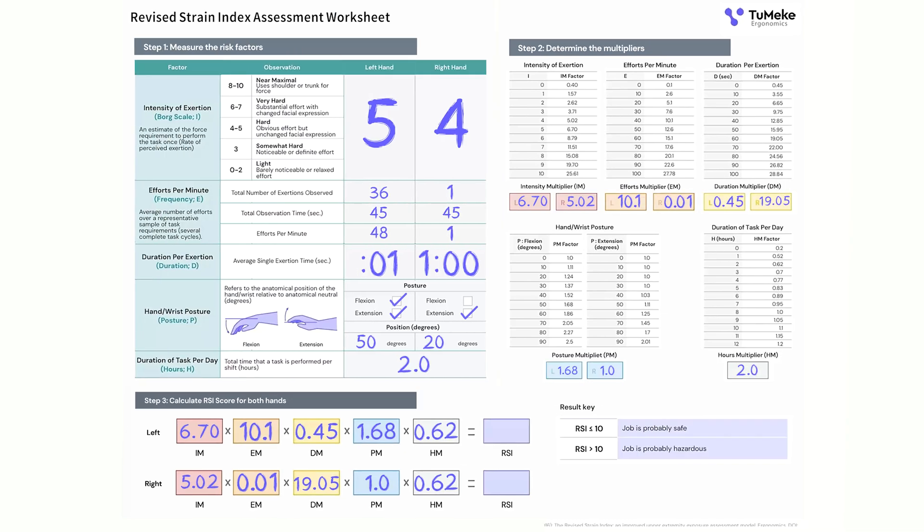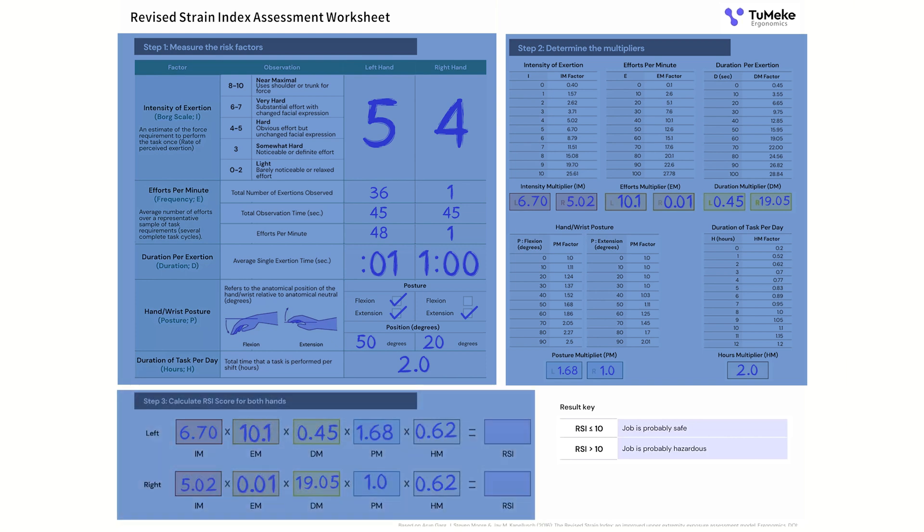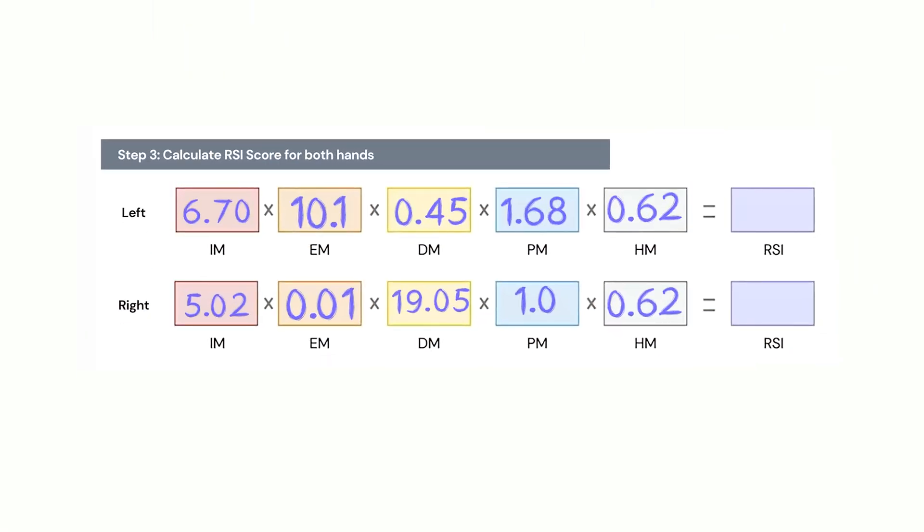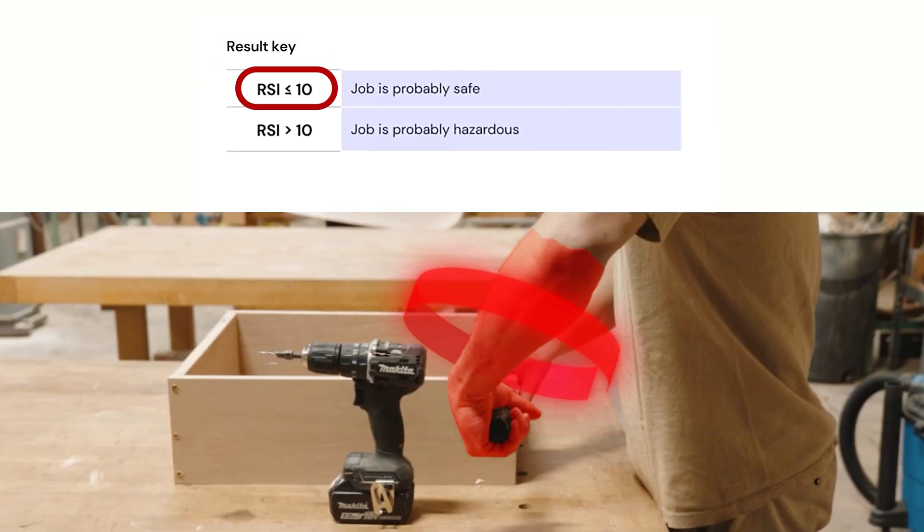All we've got to do now is calculate the RSI score for both hands. We did everything right. We've got all of our inputs in step one. We went through our conversion factors in step two. We plug those conversion factors into step three. We run the numbers and we find out that the left hand has a number over 30, while the right hand has a number under one. What does that all mean? That's where we go to the results key in the lower right hand corner. And you'll see that anything over 10 is a hazard. Anything under 10 is not, which basically means the left hand does a hazardous task if it's being done a lot for two hours while the right hand isn't. So what do we do? We've got a ranking now. We have to prioritize. We have to respond to that.